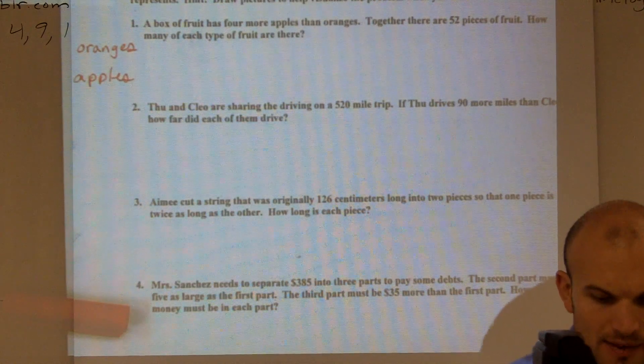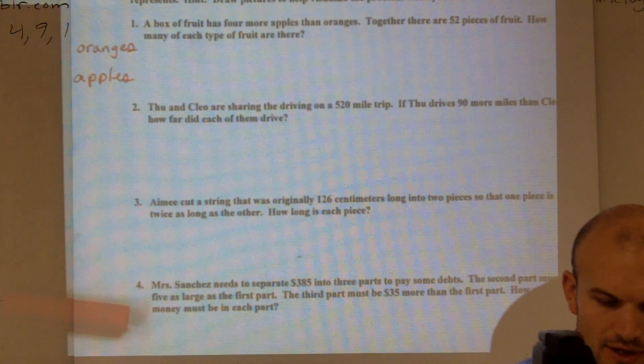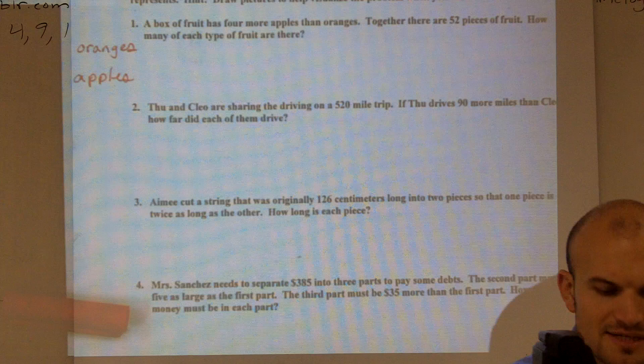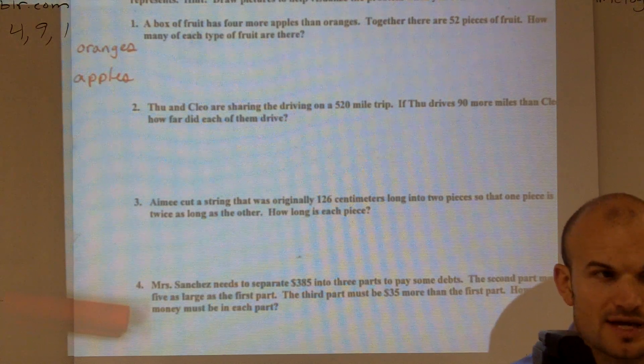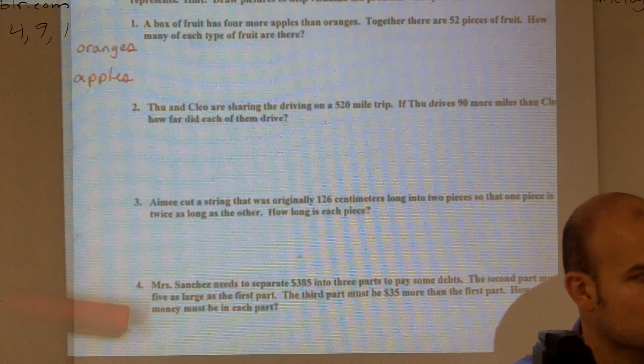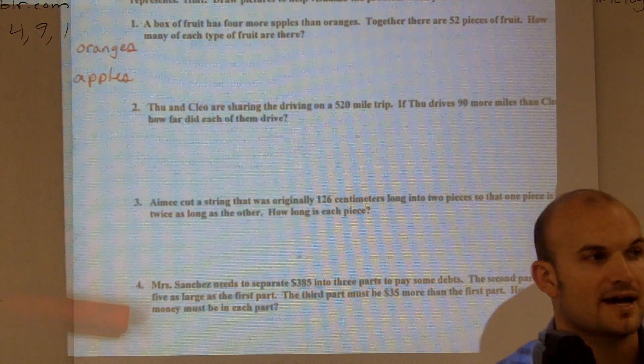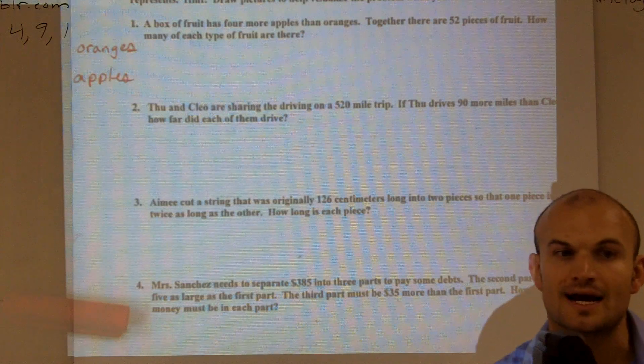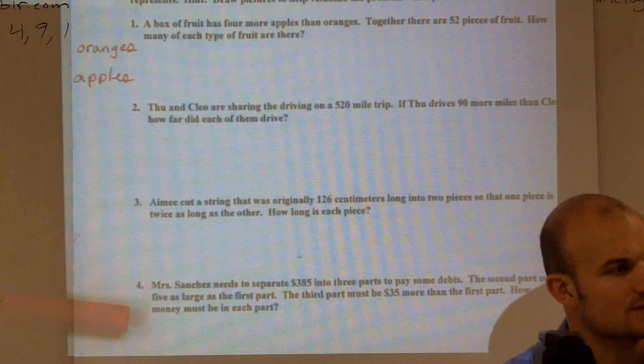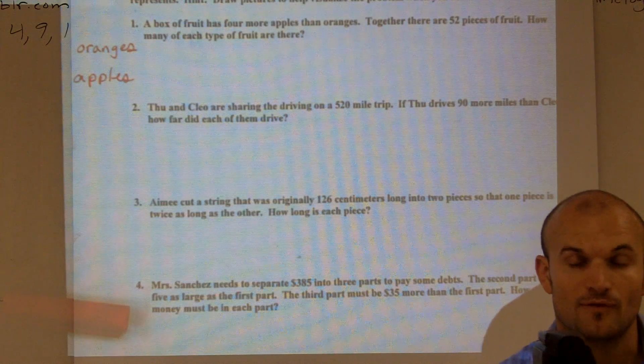So when I read back through the problem, it says, first problem says a box of fruit has four more apples than oranges. So what that's telling me is if I know how many oranges I have, I can figure out how many apples because there's four more apples. So if I had five plus four is nine. If I had 20 oranges, I would have 24 apples.